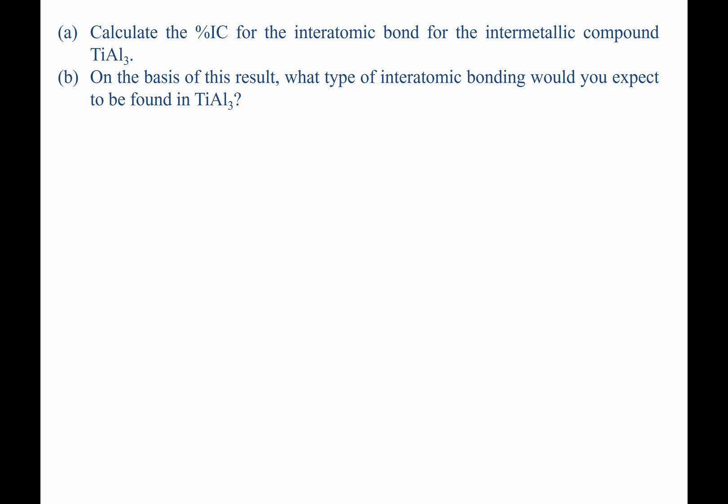To begin this question, we refer to the equation for percent ionic character found in the chapter. Percent ionic character is given here. It depends on two parameters, ChiAl and ChiTi. These are the electronegativities for aluminum and titanium respectively. And the values can be found in the periodic table showing electronegativities in the chapter in the book.